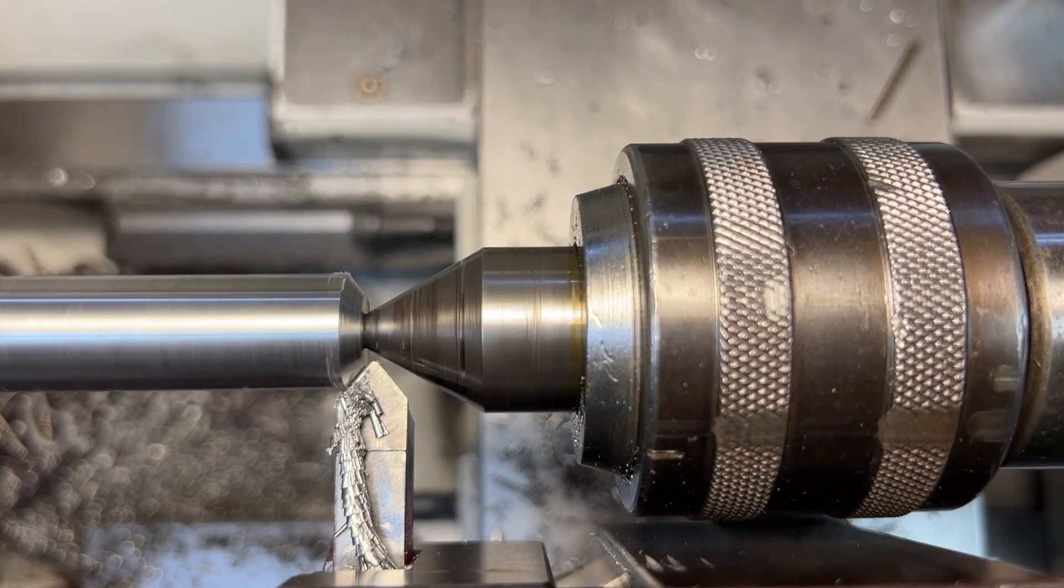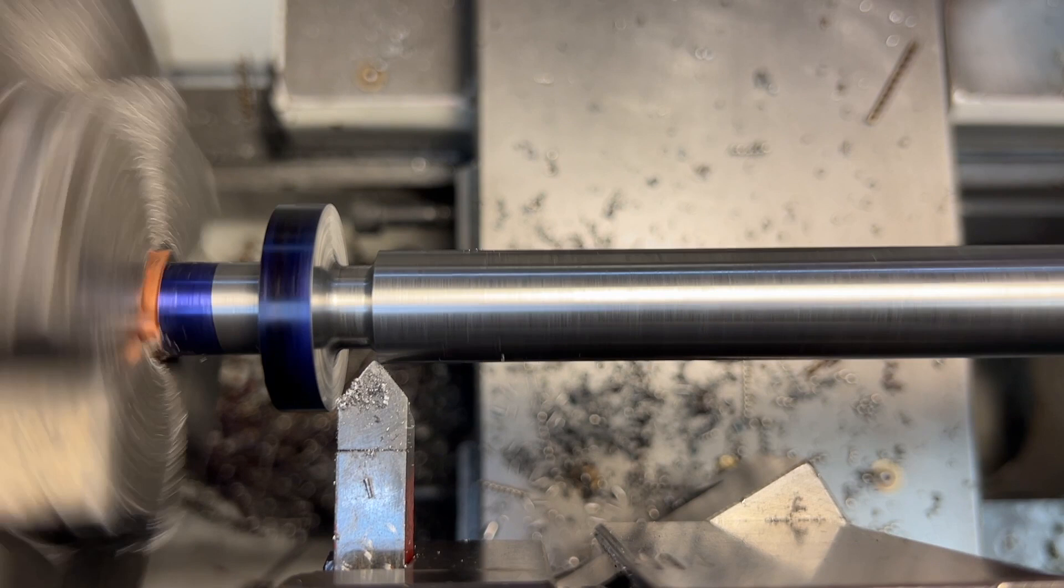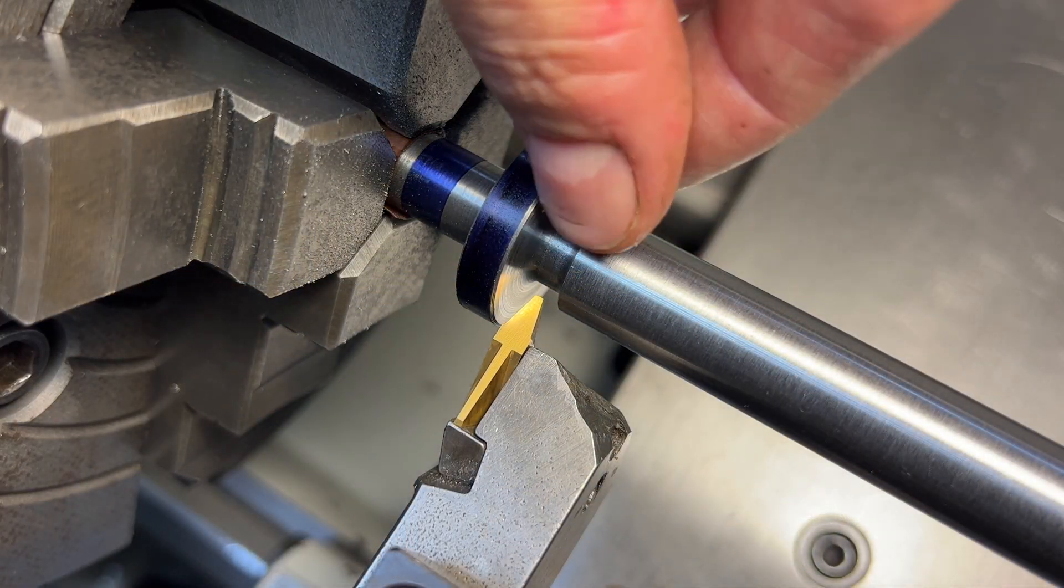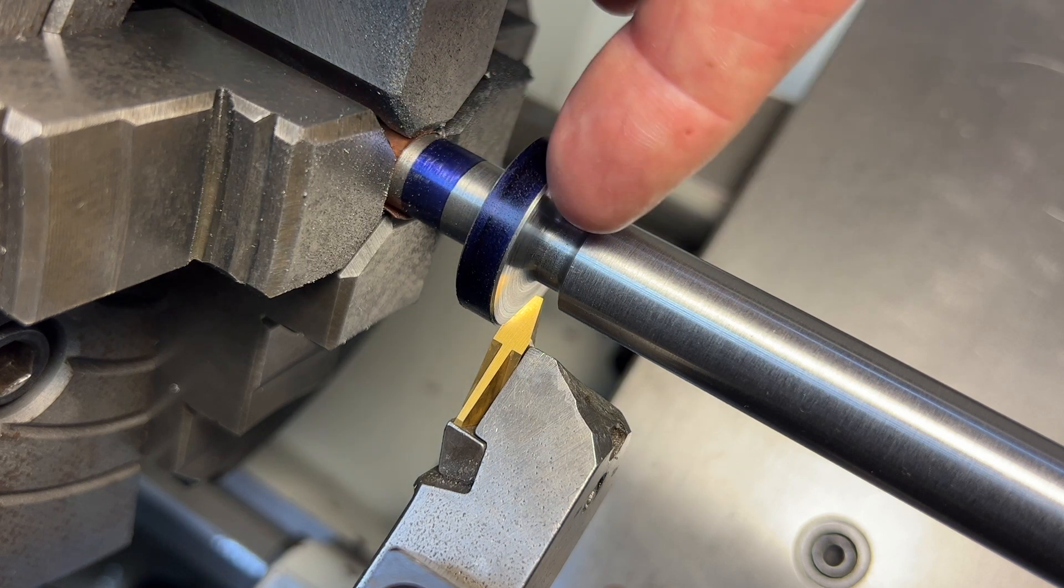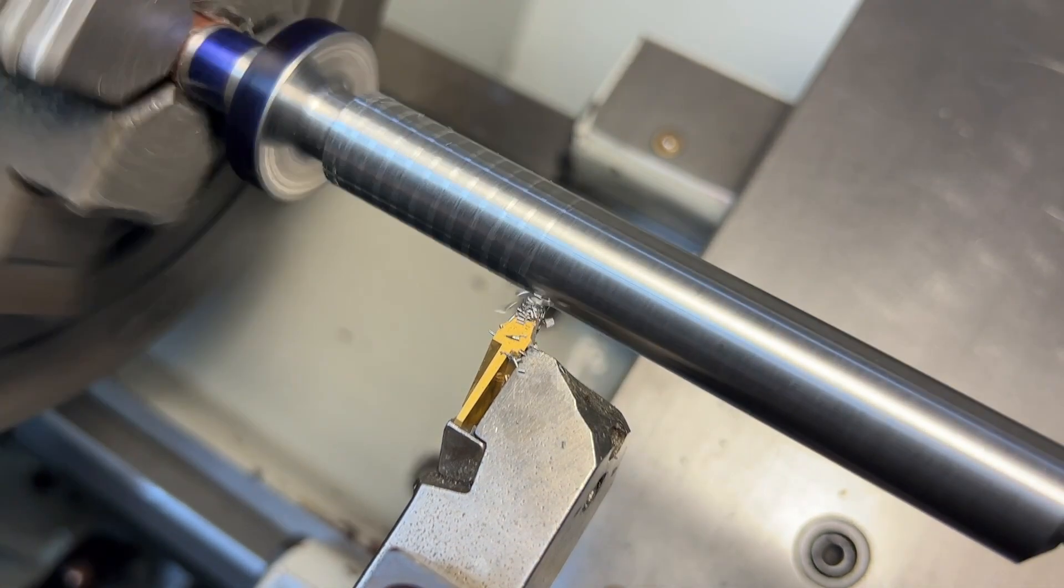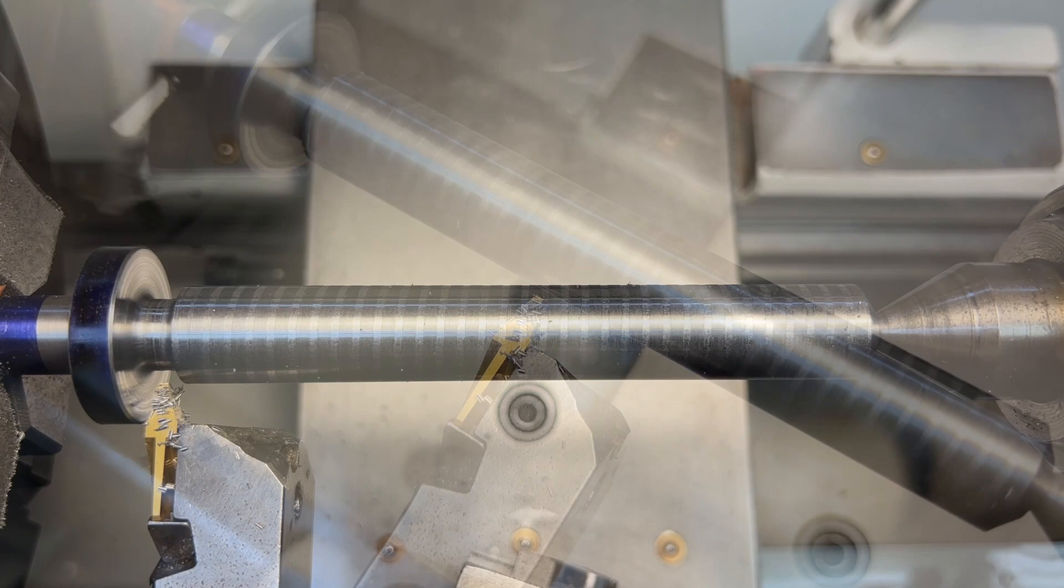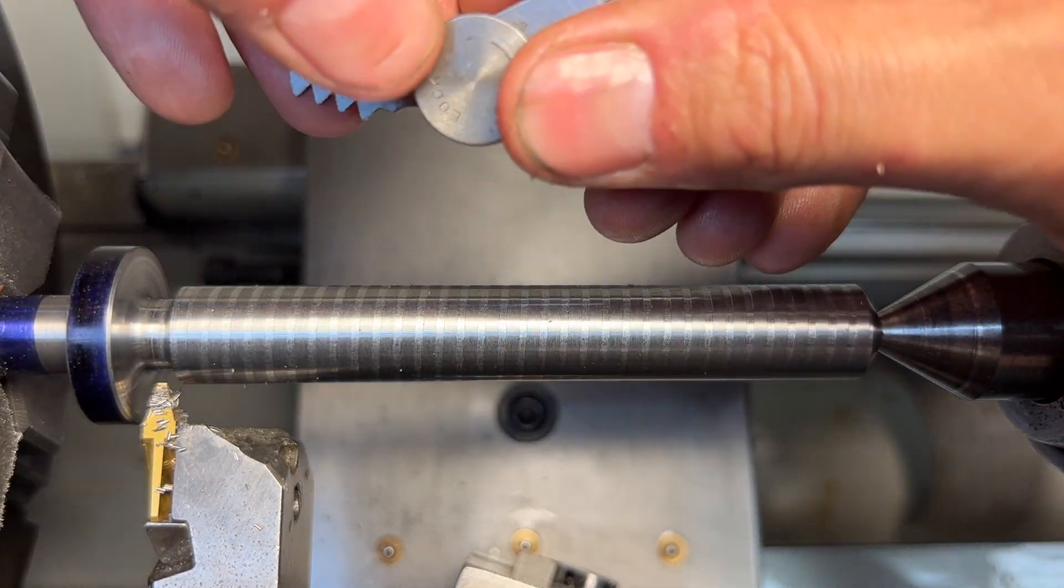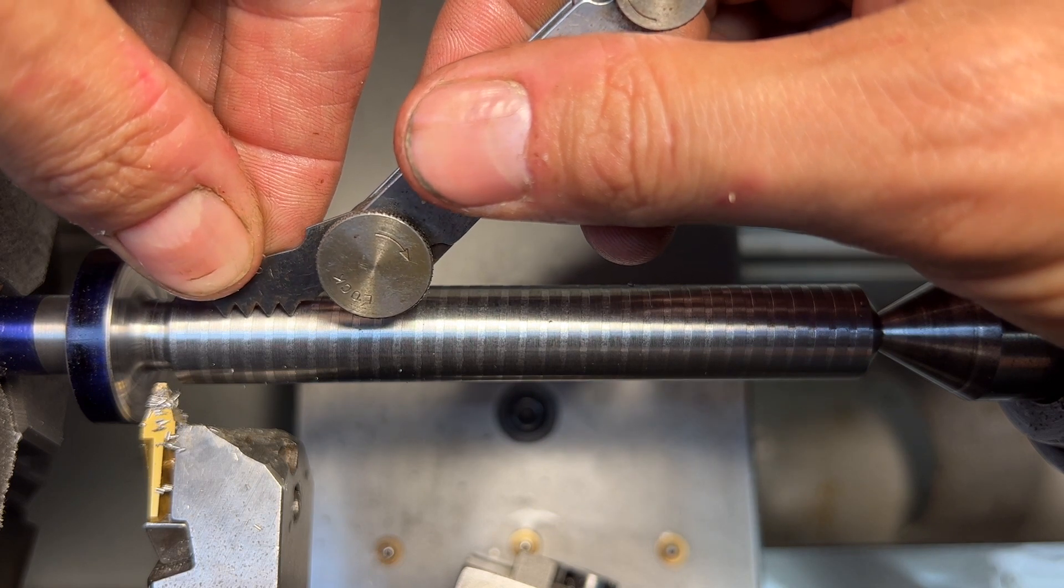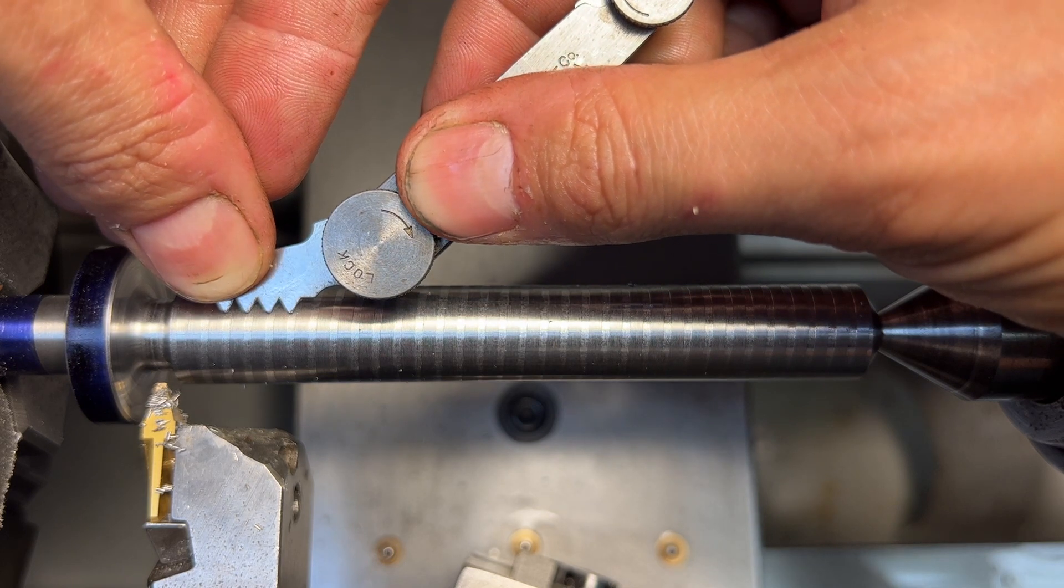We are going to be running at a nice conservative 175 rpm for this. Slow is smooth, smooth is fast. Since I have never actually threaded on this machine before, let's just go ahead and check our pitch to make sure that everything is as it should be.